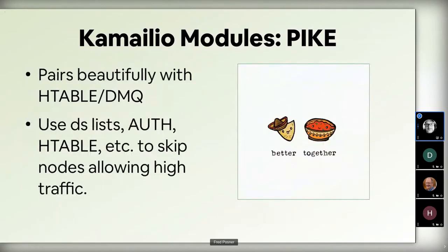Pike works really well with htable and DMQ. DMQ is great because it's like a NATO approach — if one system is attacked, all systems can respond. You can share information with other nodes. For example, you can use your dispatcher list so that a valid node isn't counted by Pike, or skip nodes in your auth table or a custom htable, allowing high-traffic nodes while maintaining defaults for the rest.